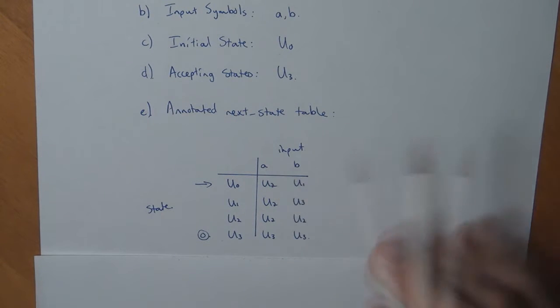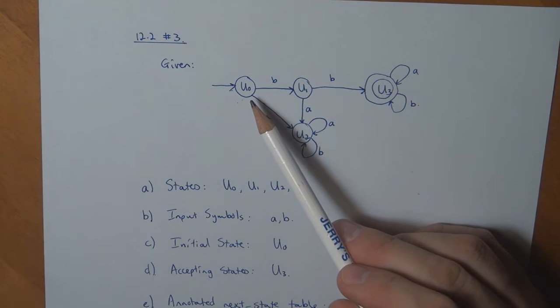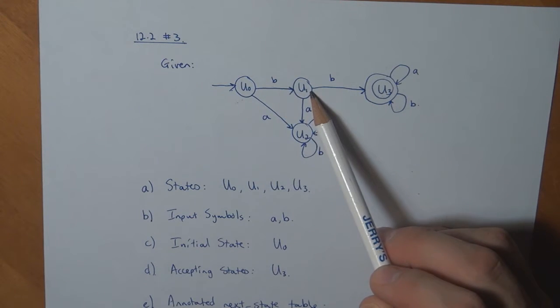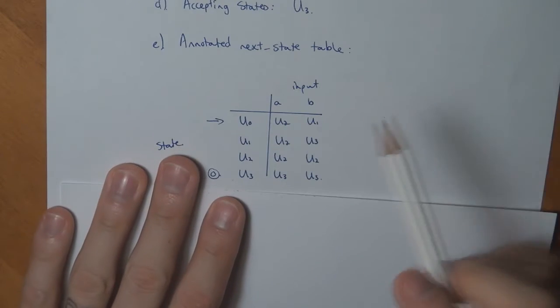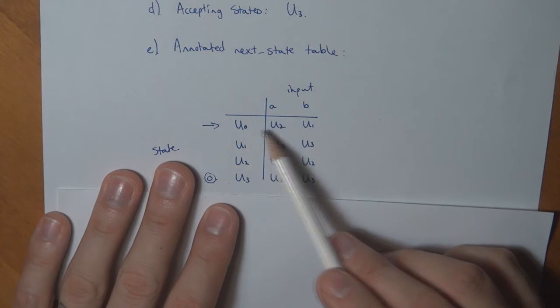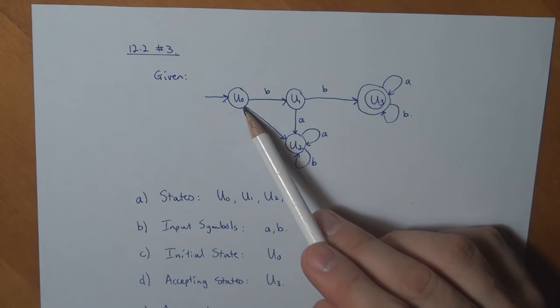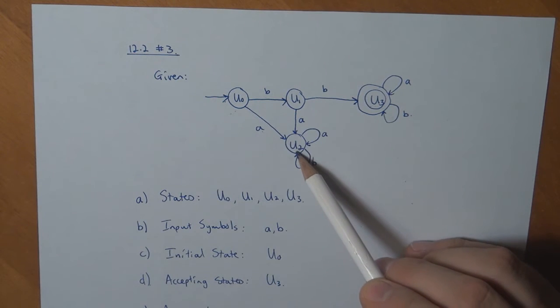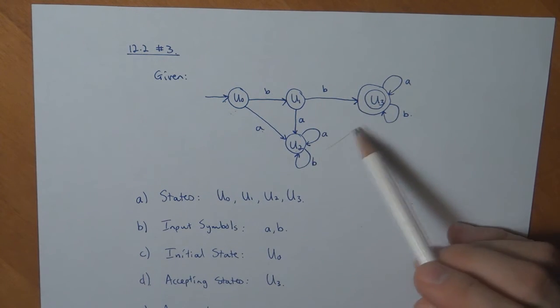Looking at the diagram, if I'm at U0 under input B, I go to U1. Under input A, I go to U2. And I complete it systematically.